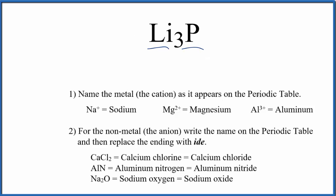So this is an ionic compound, and we can use these rules here to write the name for Li3P. So first we're going to write the name of the metal, that's the lithium, as it appears on the periodic table. So Li, that's lithium.